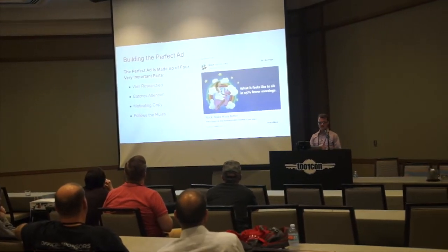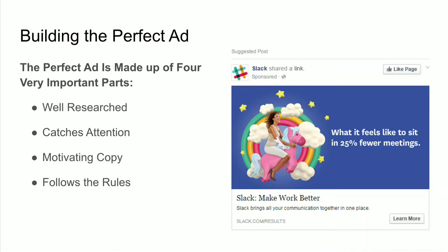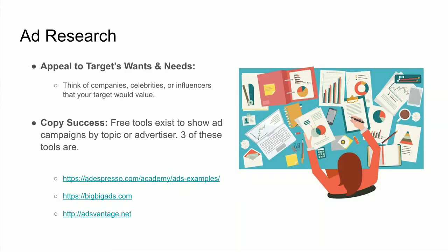Building the perfect ad has four important parts: it's well-researched, attention-grabbing, has motivating copy, and follows the rules. When talking about ad research, you want to appeal to a target's wants and needs. The easiest way is to think of celebrities, influencers, or companies that a target relies on, then put them into three free tools advertisers use every day: Ad Espresso, Big Ads, and Ad Advantage. These tools let you put in a corporation or influencer and actually see the ads those corporations have put out, so you can copy what has been successful. Success is measured from social metrics — likes, shares, and clicks at the bottom of ads.